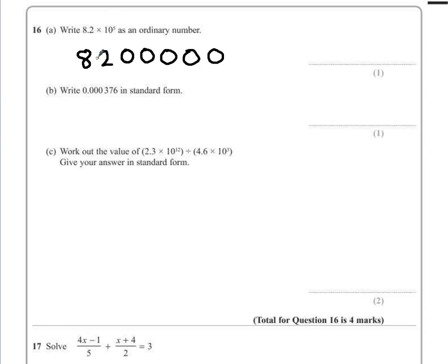So the number is getting bigger 5 times, so it goes 1, 2, 3, 4, 5. So the decimal point would go there giving us a number of 820,000.